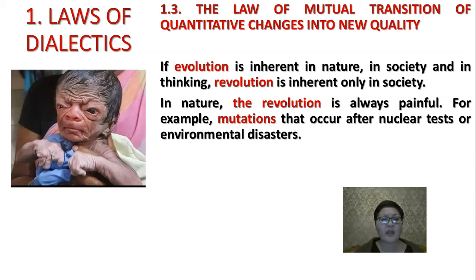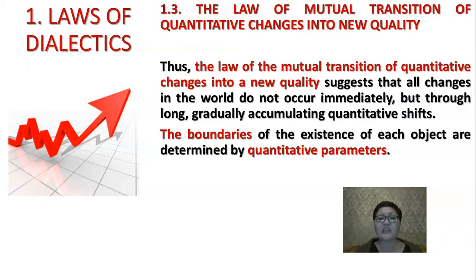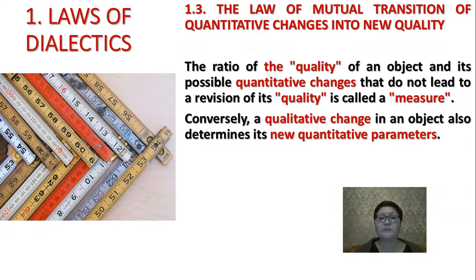Thus, the law of the mutual transition of quantitative changes into a new quality suggests that all changes in the world don't occur immediately, but through long, gradually accumulating quantitative shifts. The boundaries of existence of each object are determined by quantitative parameters. The ratio of the quality of an object and its possible quantitative changes that do not lead to a revision of its quality is called a measure. Conversely, a qualitative change in an object also determines its new quantitative parameters.